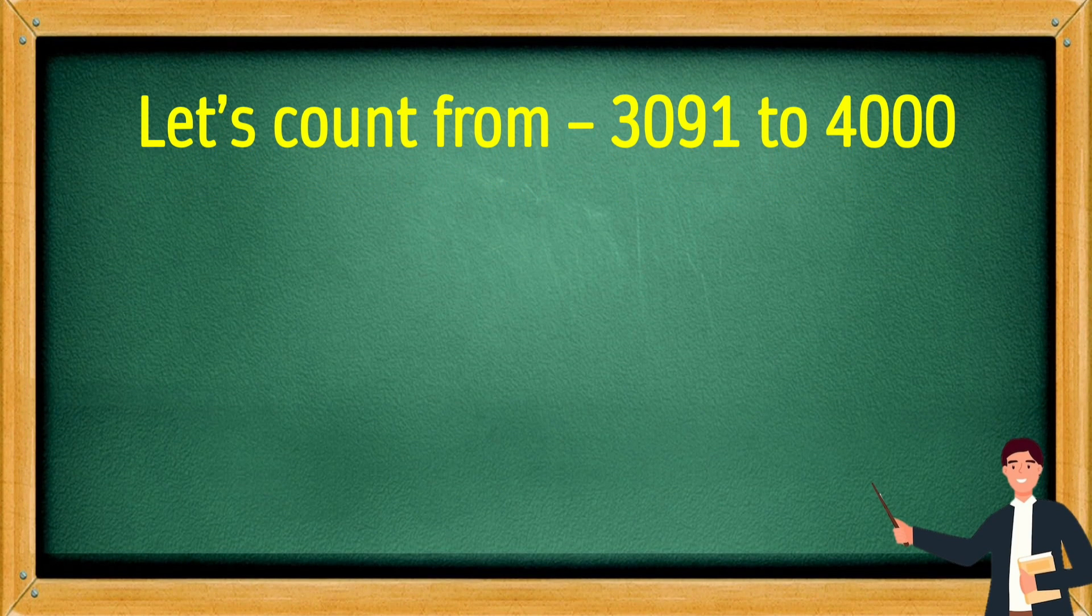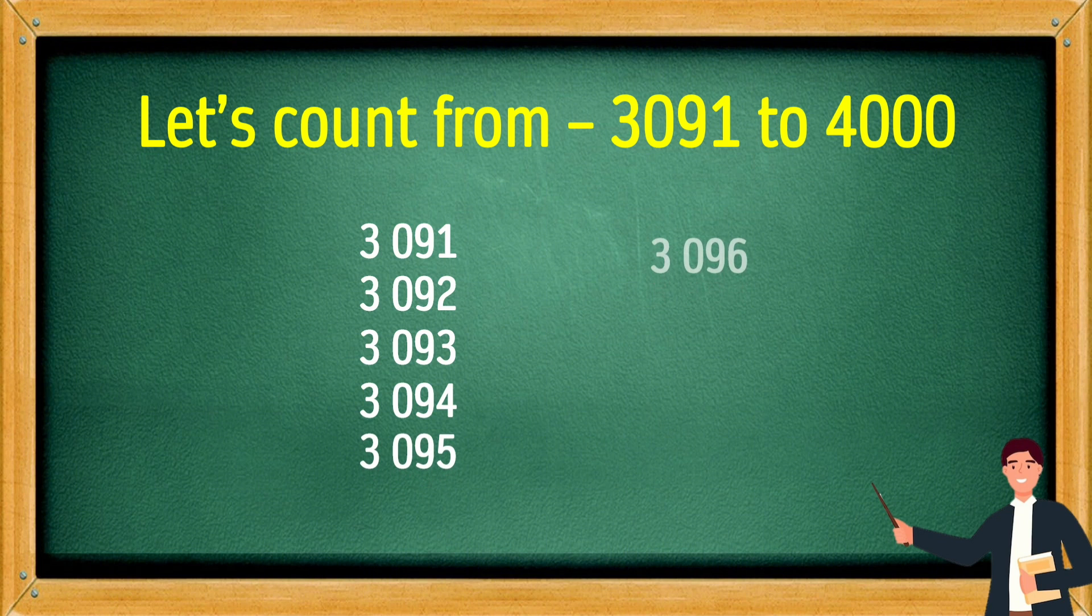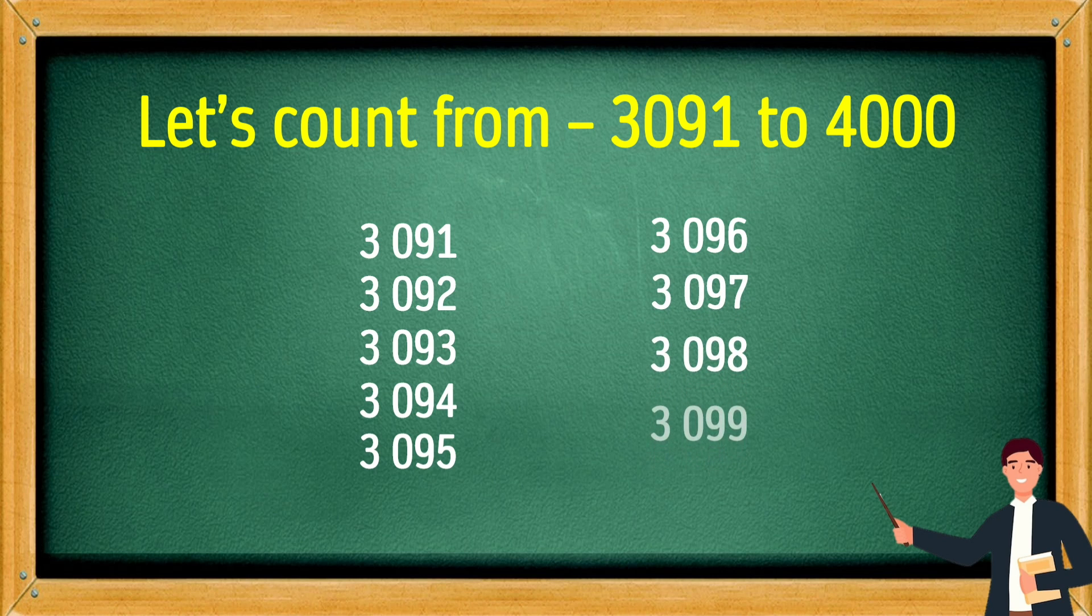Let's count from 3091 to 4000. 3091, 3092, 3093, 3094, 3095, 3096, 3097, 3098, 3099, 4000.